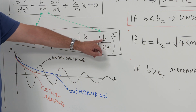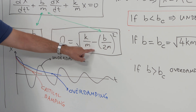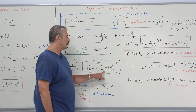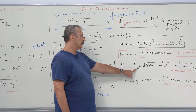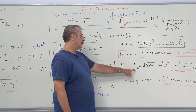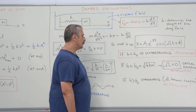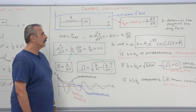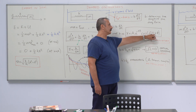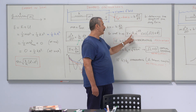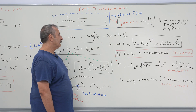When b is sufficiently large to make the inside of the square root zero, we call it the critical value of b. At the critical value of b, omega vanishes and critical damping occurs — since the angular frequency is zero, there is no more oscillation. If omega is zero, cosine phi multiplies the amplitude factor and we observe only exponential decay.